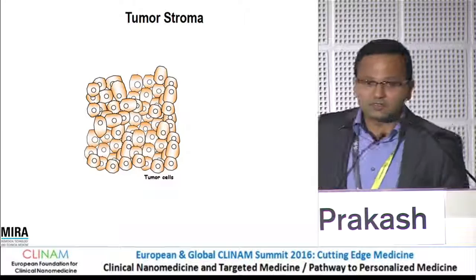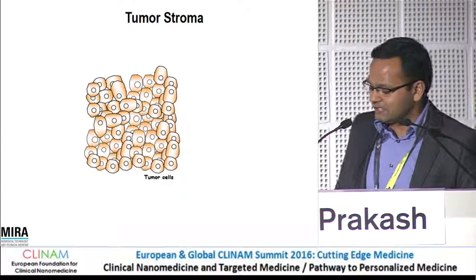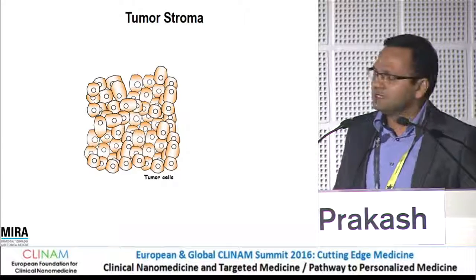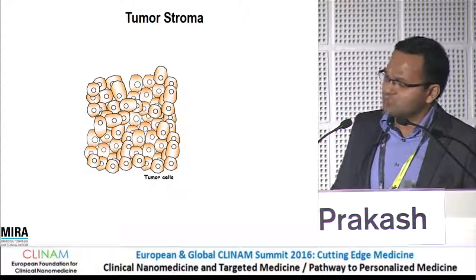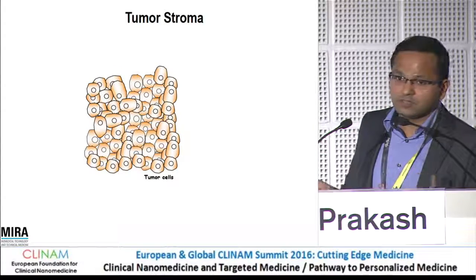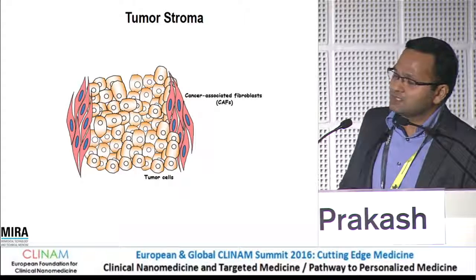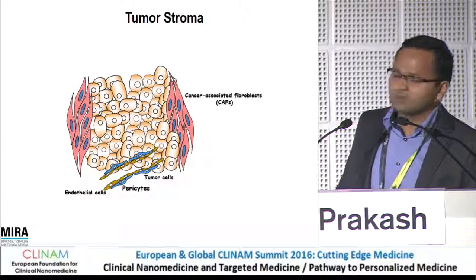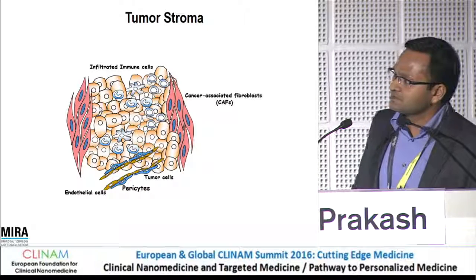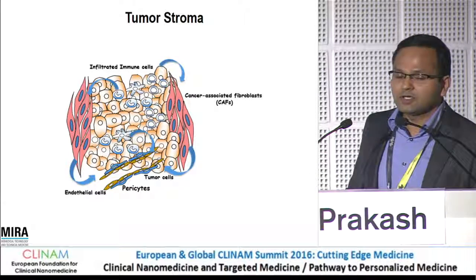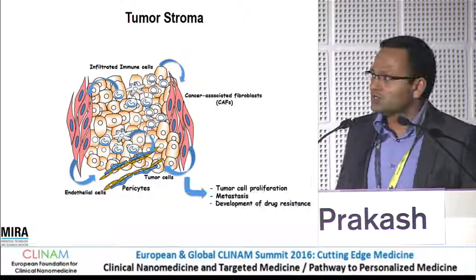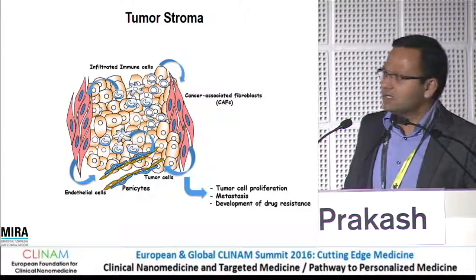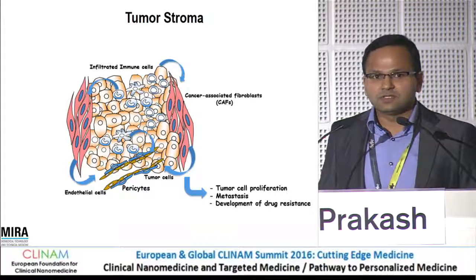The tumor is not just composed of tumor cells, as you have heard recently. There is much in the tumor microenvironment: there are fibroblasts, a lot of fibroblasts, endothelial cells covered with pericytes, and immune cells. They communicate with each other and stimulate tumor cell proliferation, metastasis, and also lead to resistance in tumor cells.